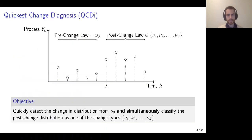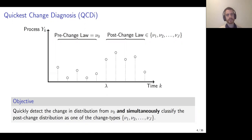Quickest Change Diagnosis involves sequentially observing a statistical process Y_K. Initially, this process is described by probability law nu-naught — the pre-change probability law. At some unknown change time lambda, the distribution of the process changes to a post-change law. In Quickest Change Diagnosis, that post-change law may be one of J possible candidates or change types, nu-1 to nu-J. The objective is to observe this process sequentially, quickly detect the change in distribution from nu-naught, and simultaneously classify the post-change distribution as one of the J possible change types.